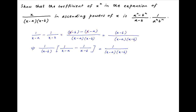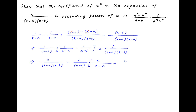It follows that x upon (x minus a)(x minus b) can be written as 1 upon (a minus b) times the quantity [x upon (x minus a) minus x upon (x minus b)].